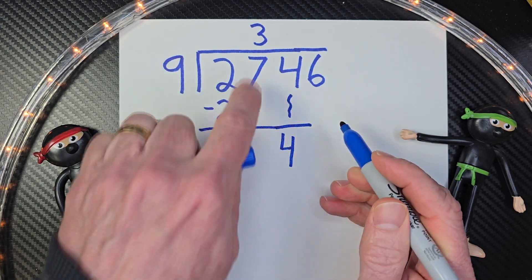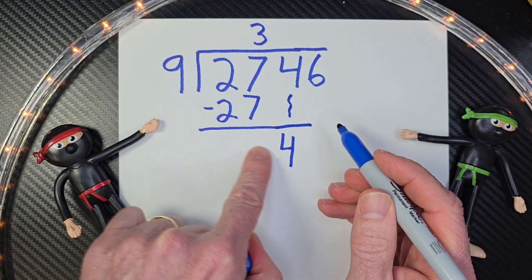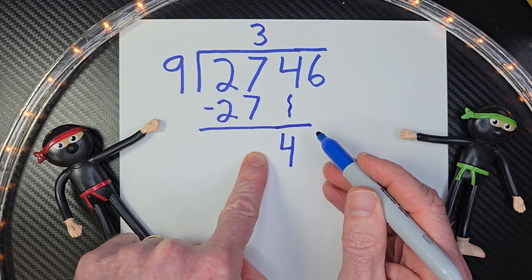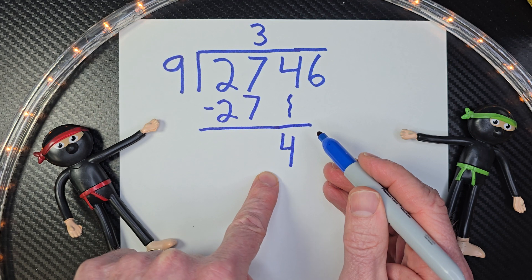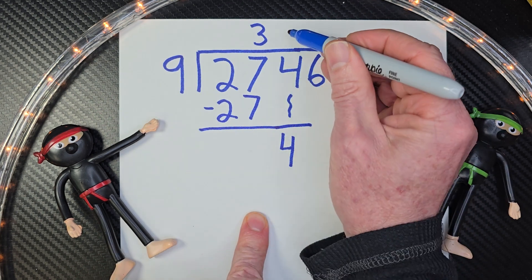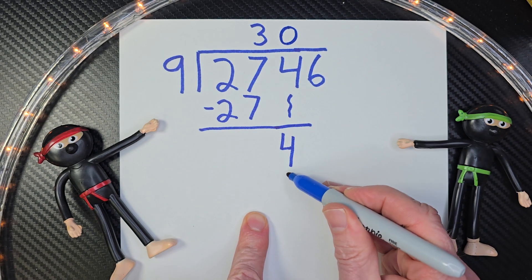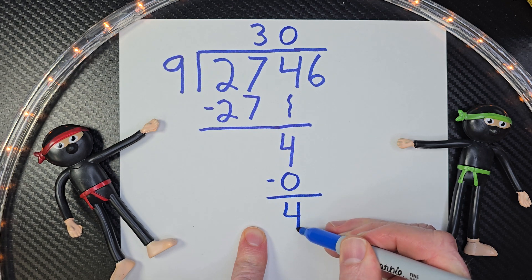So again, we start the whole process over again, and how many times can I put 9 into 4? 9 times 1 is 9. What about 0? 9 times 0 is 0. So I'm going to put a 0 up here. 0 times 9 is 0. Subtract, and this would give me 4.